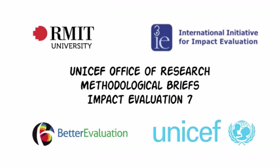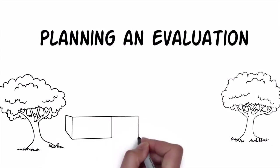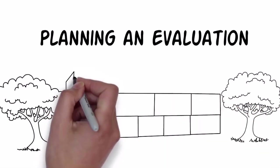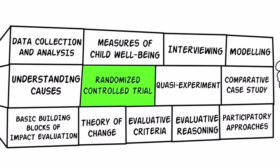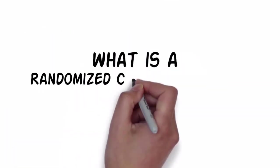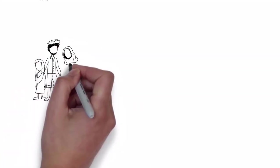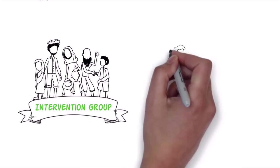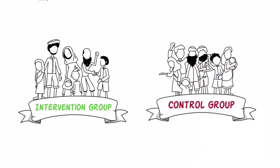RCTs are one option to consider when planning an impact evaluation. Before deciding to use RCTs, you will need to consider the building blocks of evaluation: research design, data collection, and analysis and synthesis. RCTs measure the impact of an intervention on a particular outcome by conducting a carefully controlled experiment to compare at least two groups — one which has received the intervention and one which hasn't, known as the control group.